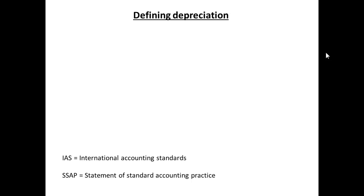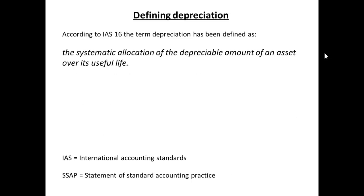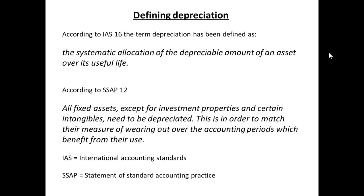How would we define depreciation? According to international standards, the term depreciation is defined as the systematic allocation of the depreciable amount of an asset over its useful life. Remember that important term, useful life. And the statement of standard accounting practice states that all fixed assets, except for investment properties and some intangibles, need to be depreciated — in order to match the measure of wearing out over the accounting periods which benefit from their use.